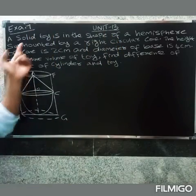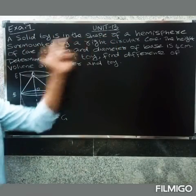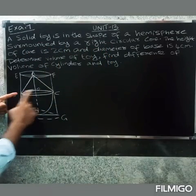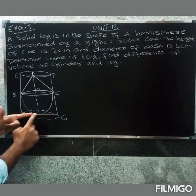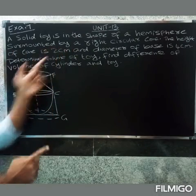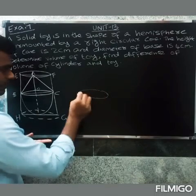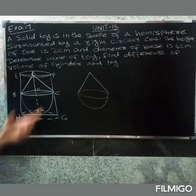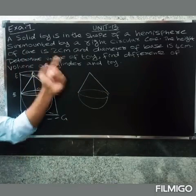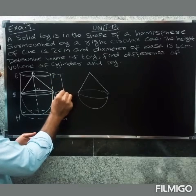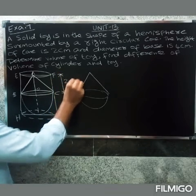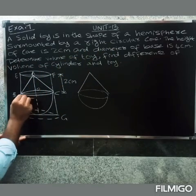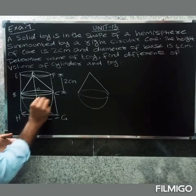Example 7. A solid tie is in the shape of a hemisphere surmounted by a right circular cone. The height of the cone is 2 cm and the total diameter of the base is 4 cm.